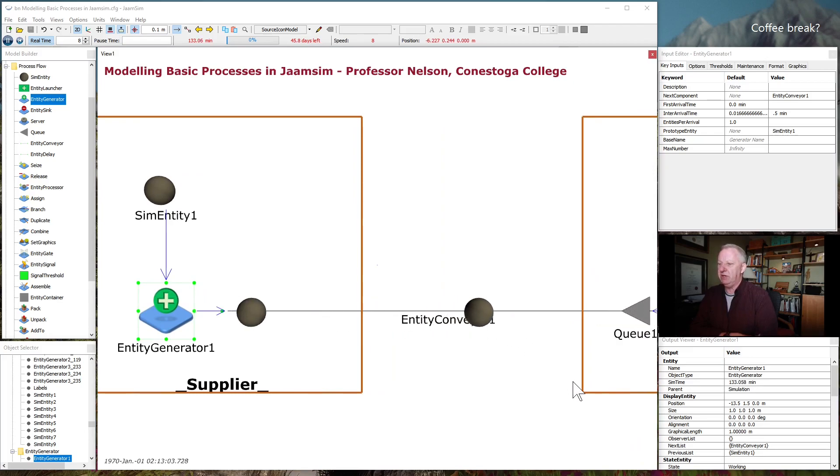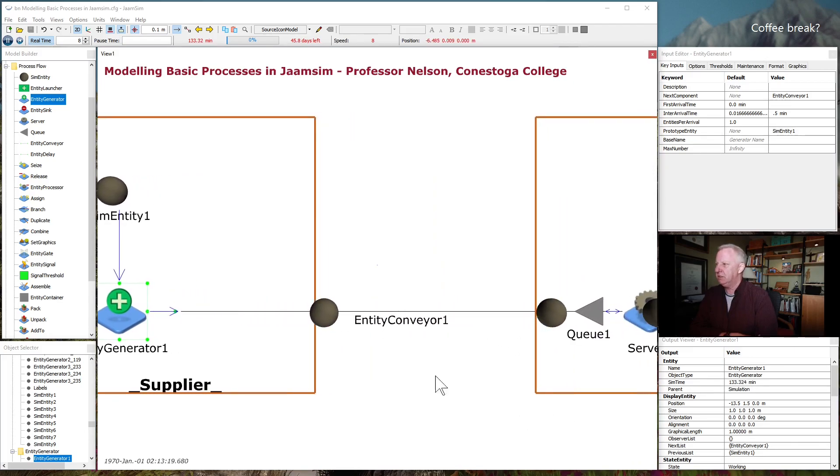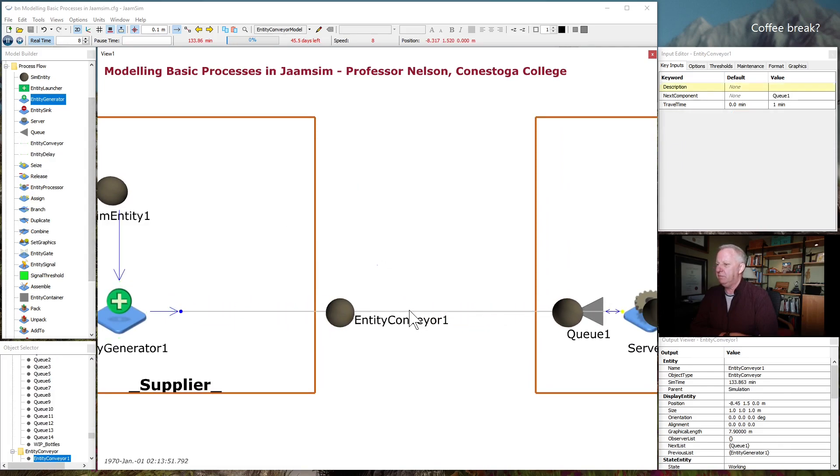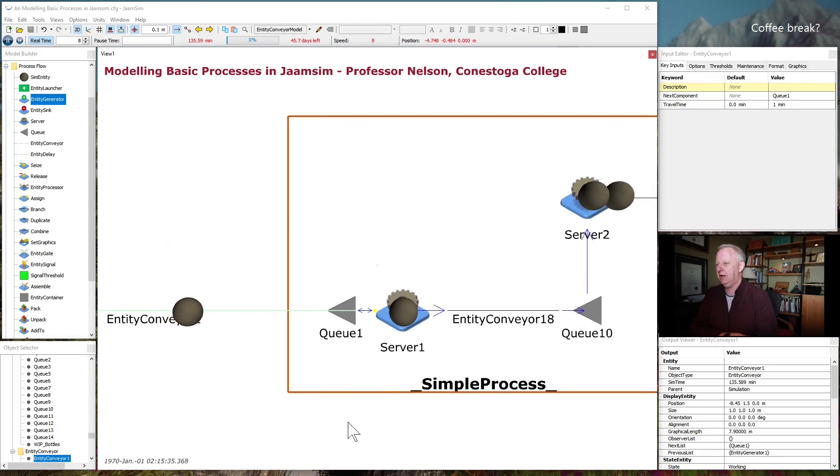Like I said, a lot of models are going to start this way with a defined entity and a generator. We'll use sim entities and generators in other parts of the model, and I'll show you those as we go along. I'm using a simple conveyor to connect these different blocks. The conveyor also comes from the menu here. And for that, you're just defining where does it go, what does it connect to, and how long does it take elements to travel across the length of the conveyor.